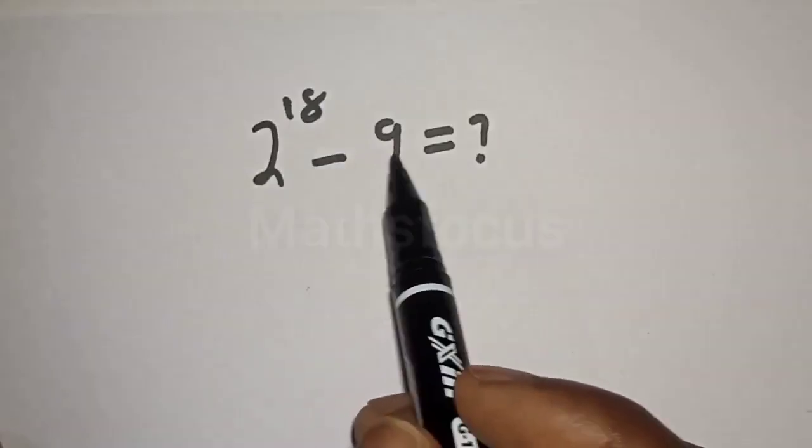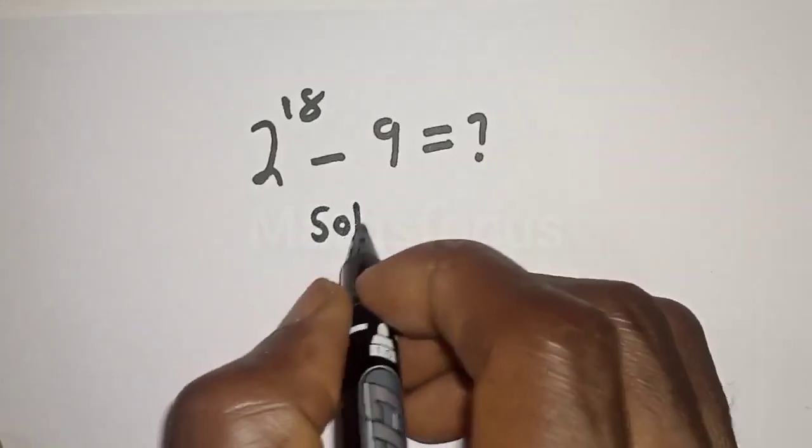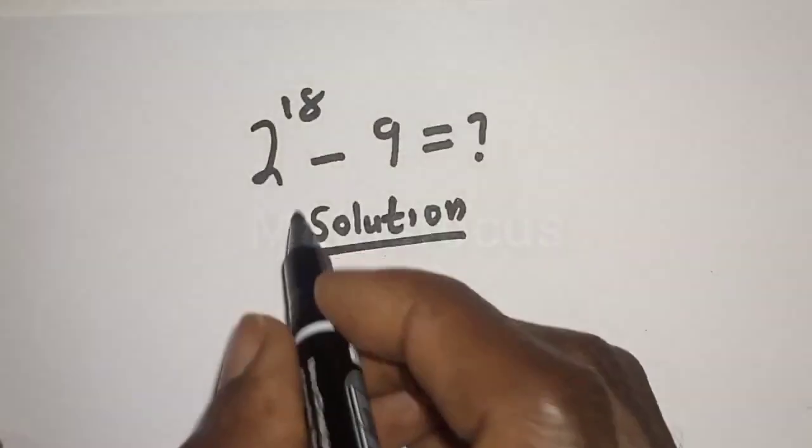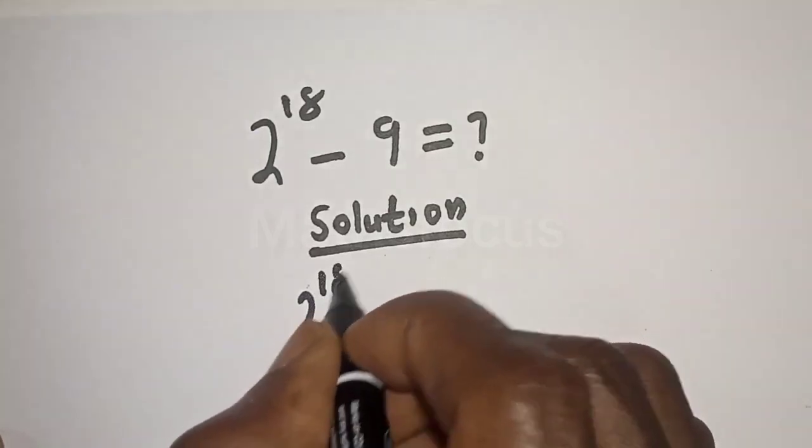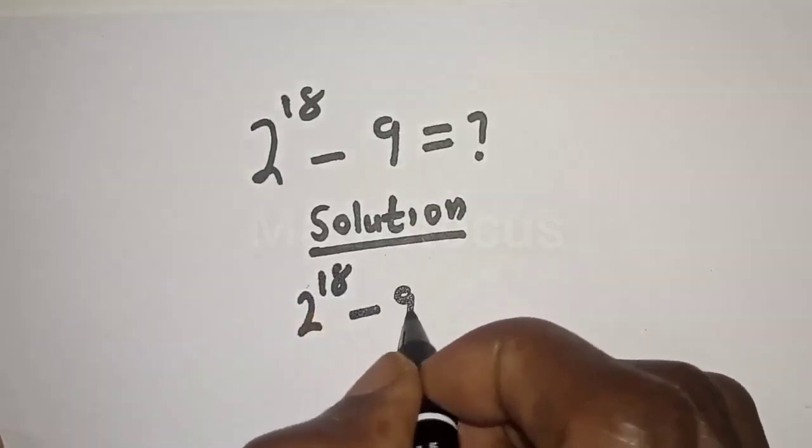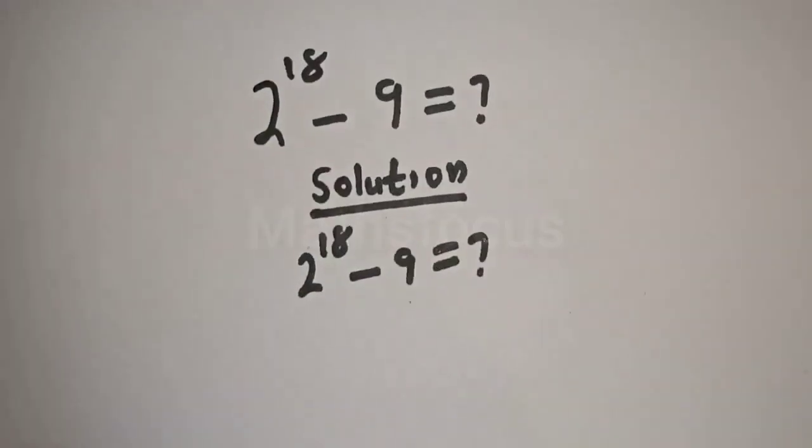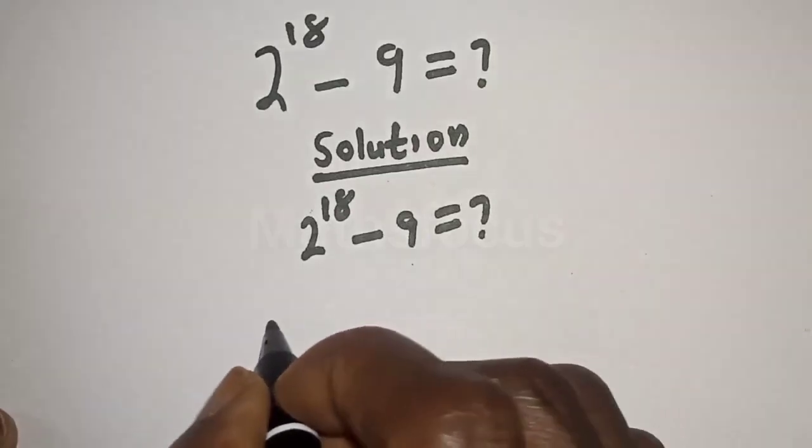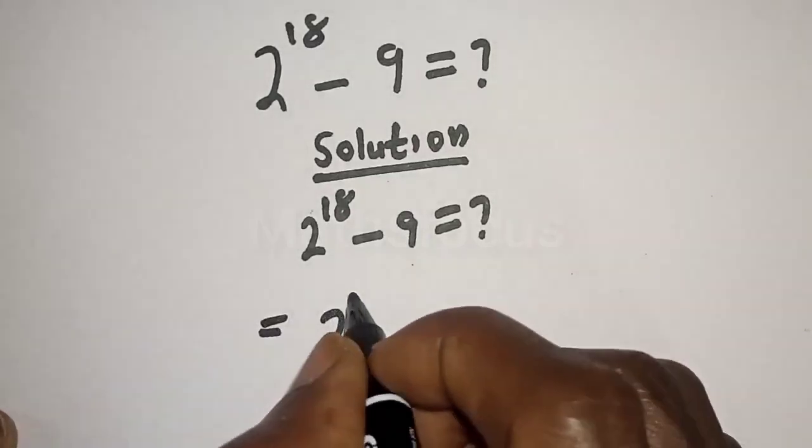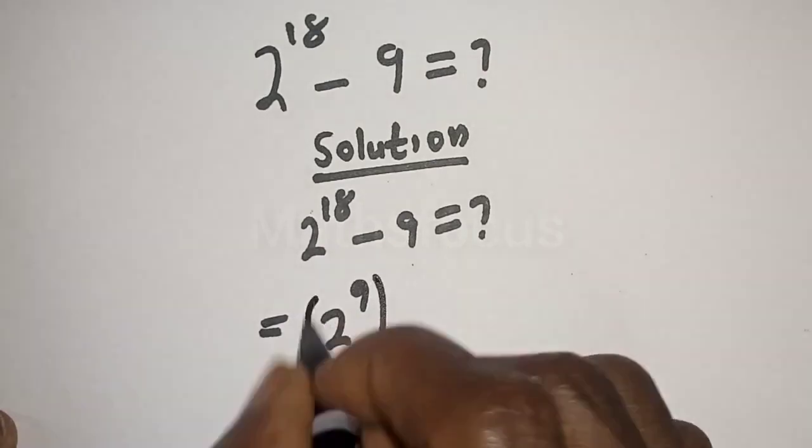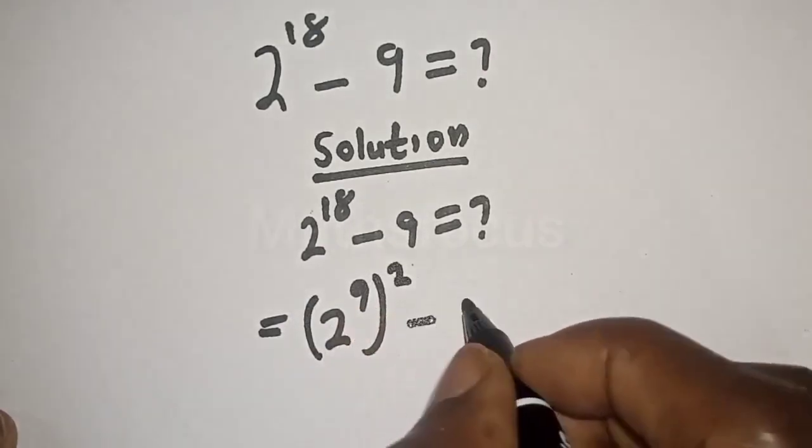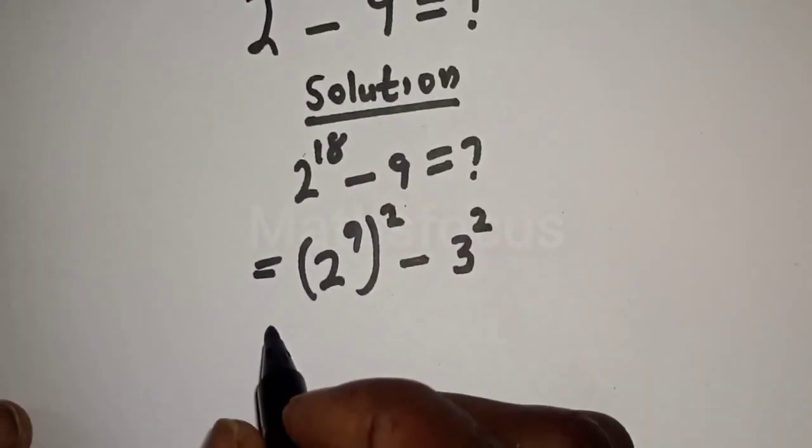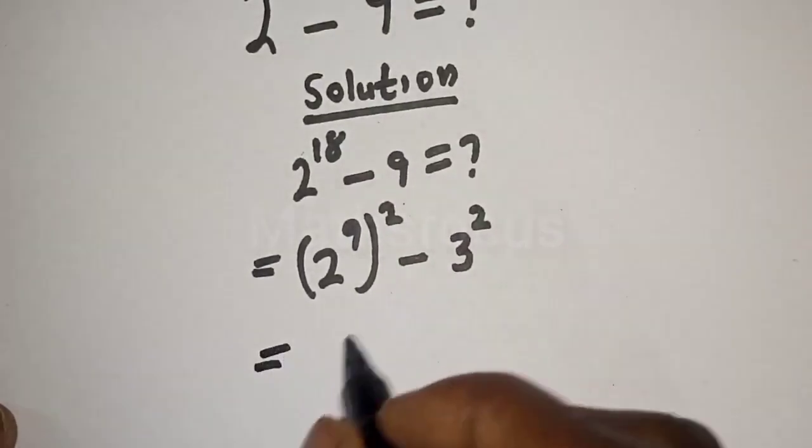2 raised to power 18 minus 9 is equal to what? Solution: we have the given equation 2 raised to power 18 minus 9. We don't know the value. Now 2 raised to power 18 can be rewritten as 2 raised to power 9 squared, and minus 9 can be rewritten as 3 squared.